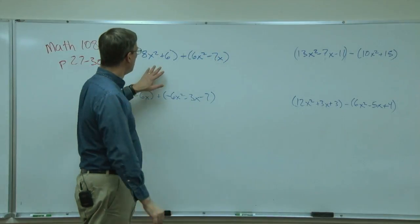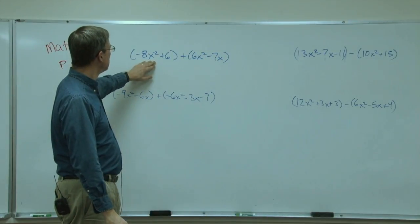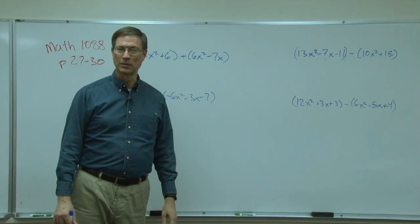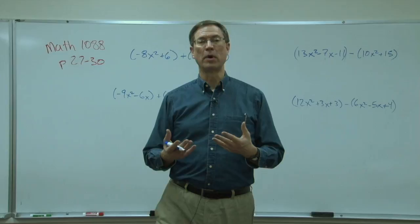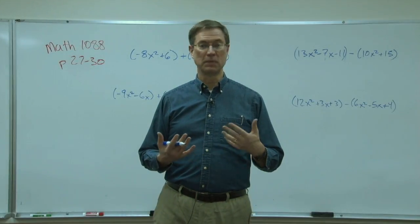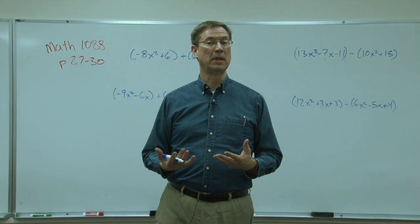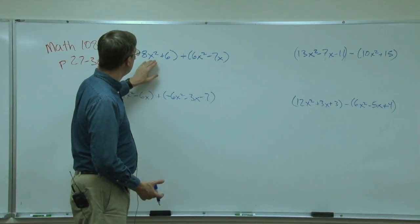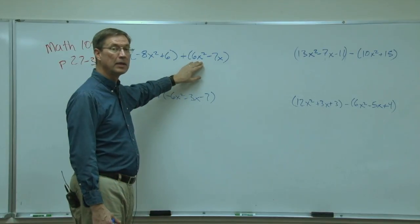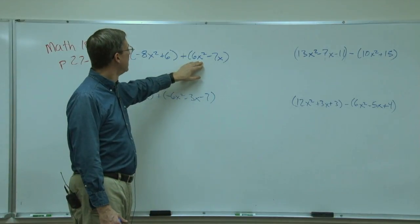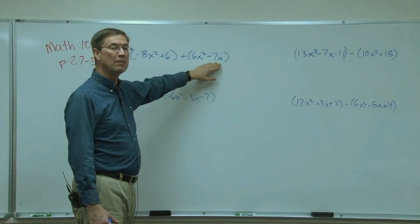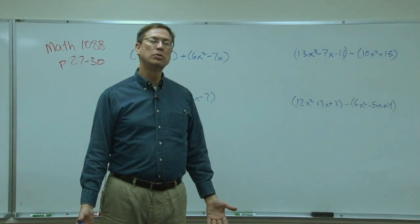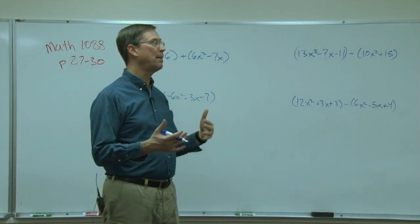We have -8x² + 6 and then we're adding 6x² - 7x. Now when we're adding, we're just looking for what are called like terms. A like term doesn't just mean it has the same variable, the same letter in it. It also has to have the same exponent. So x², x² - these two are considered like terms and I can actually combine them. But notice there is no like term for the 7x because this has an x in it and this 6 does not have an x, so those two terms are not like terms and we can't do anything with them.